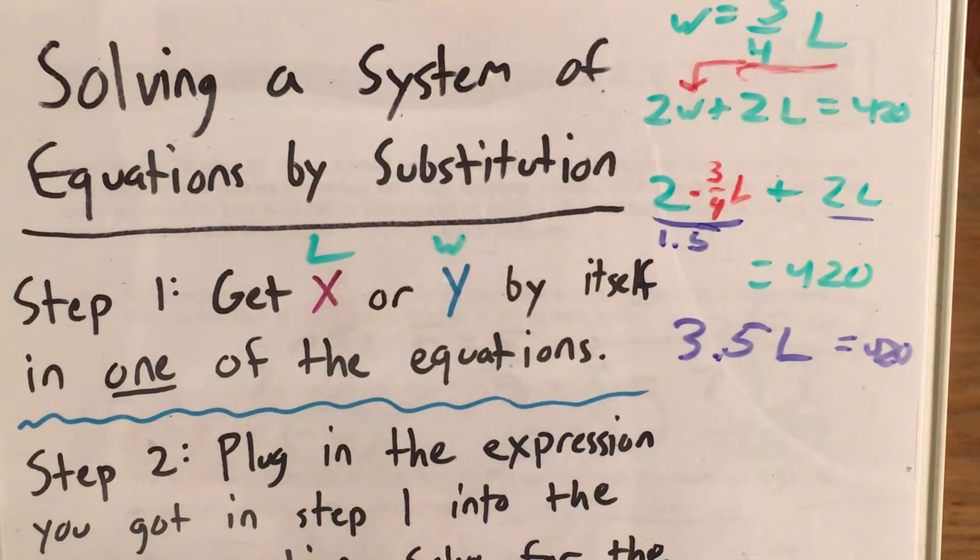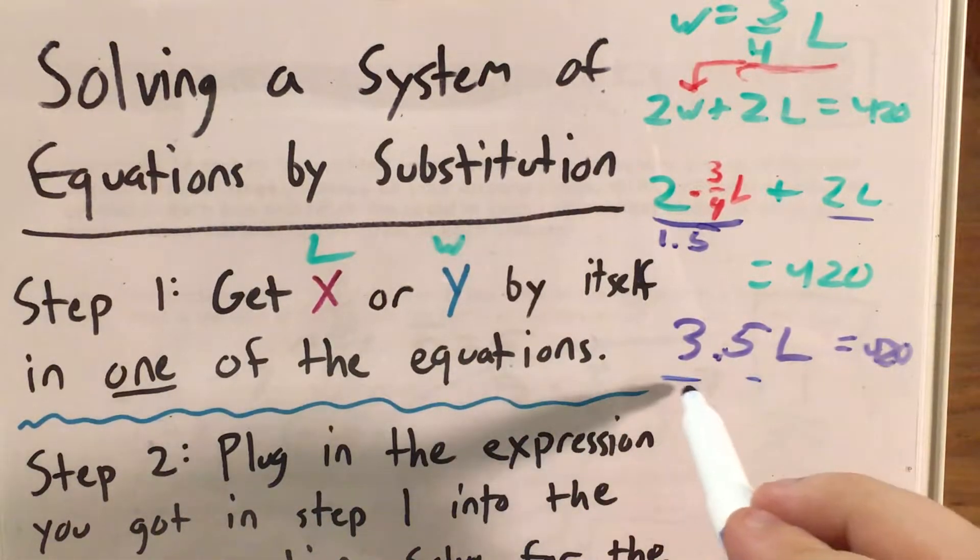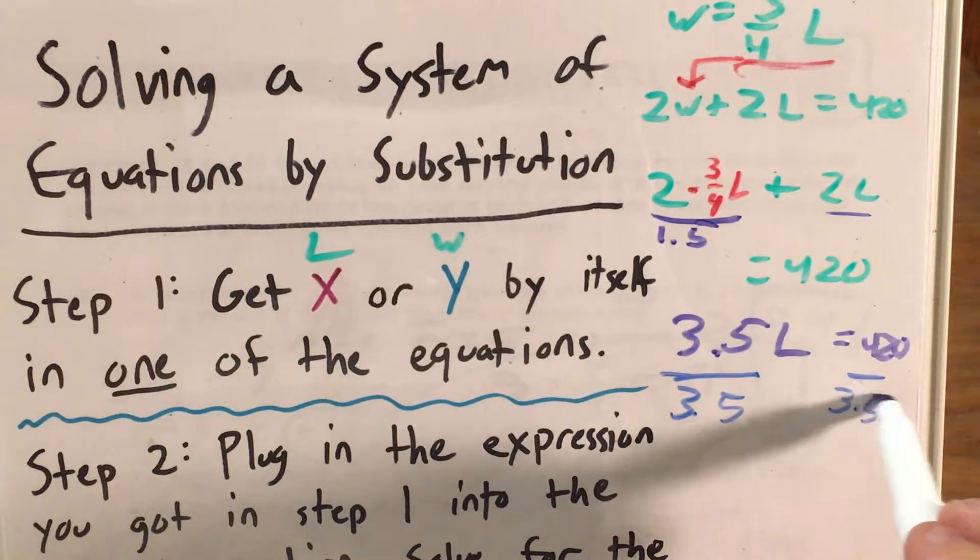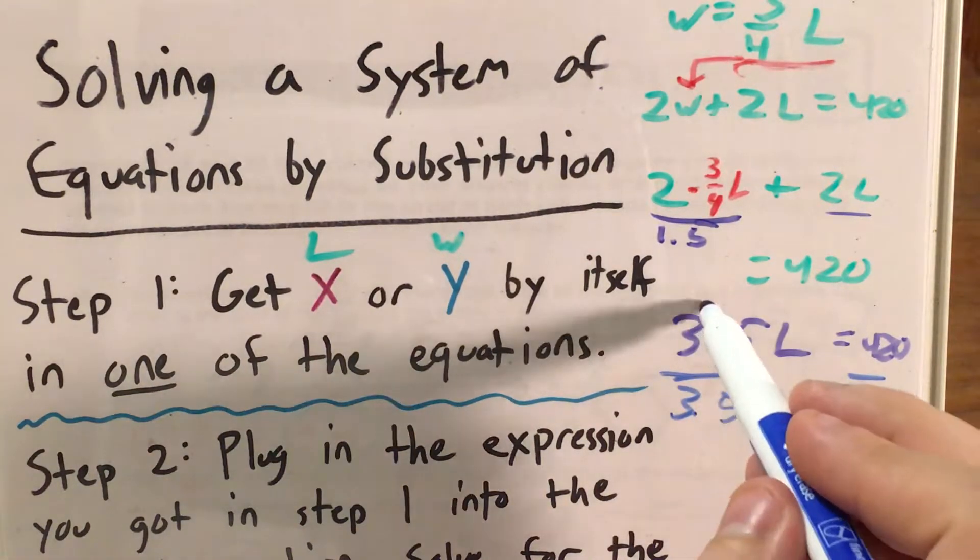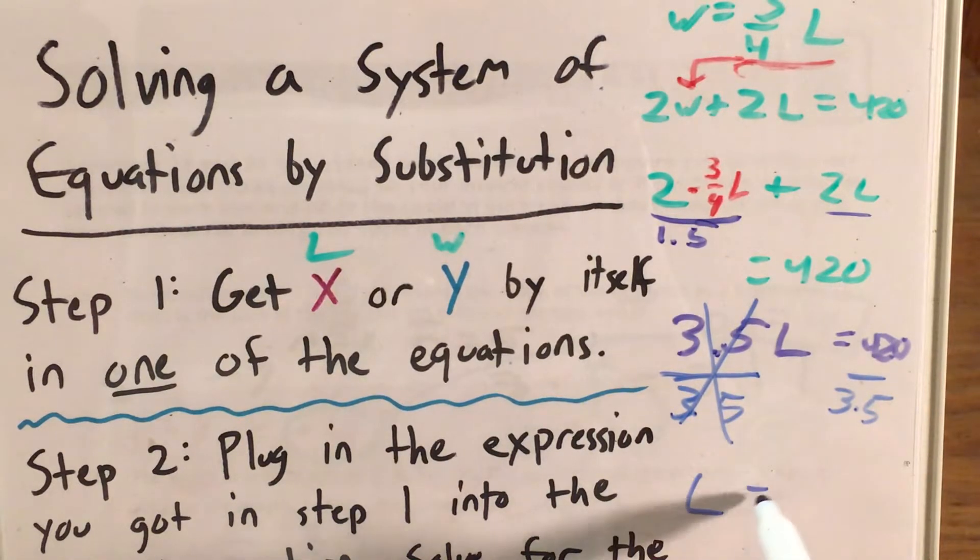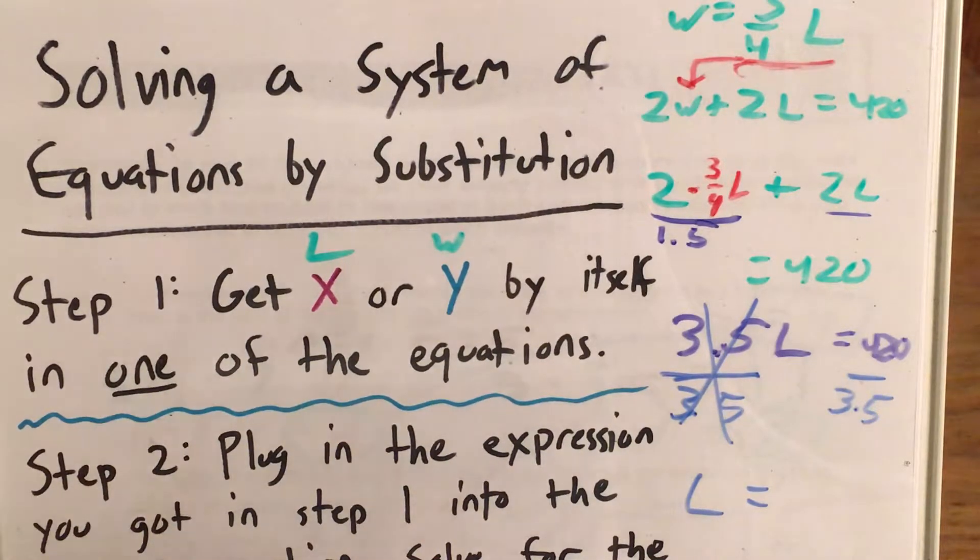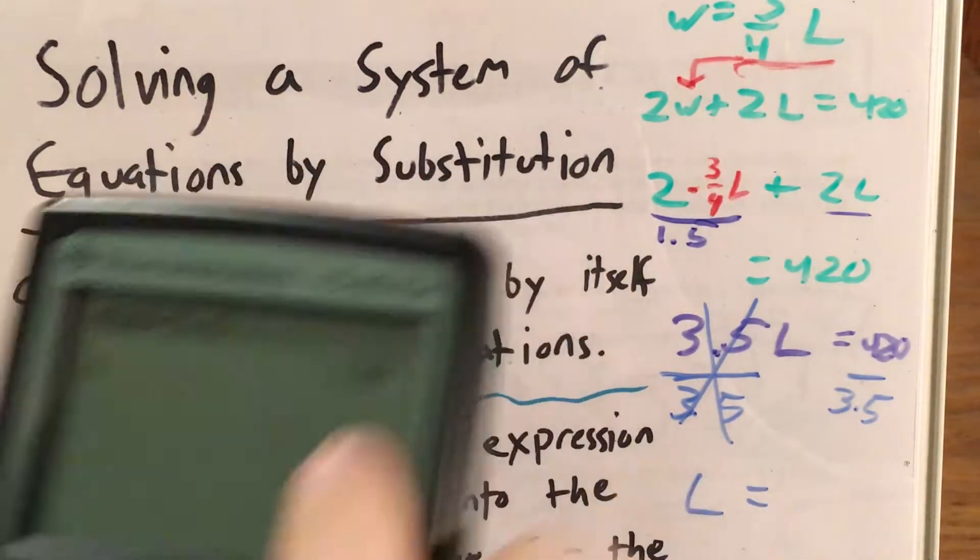Now after combining like terms, I can just see that I'm trying to get this variable by itself. It's multiplied by three and a half, so I need to divide both sides by three and a half. Three and a half divided by three and a half is going to cancel, and my length is just going to be three and a half times 420, which when I type that in my calculator gets me 120.